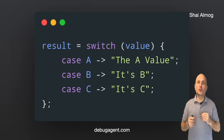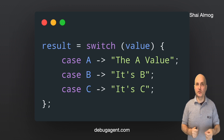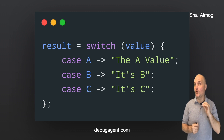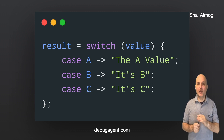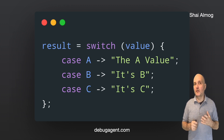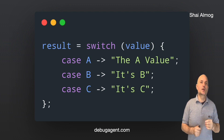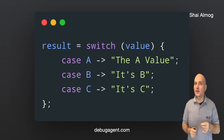We can do better with switch expressions. This code solves all the problems mentioned. It is not verbose. We assign a result directly from the switch and don't even need a return statement or break. If we add a new enum value, the code will not compile — it must be exhaustive. So we don't need a default entry.